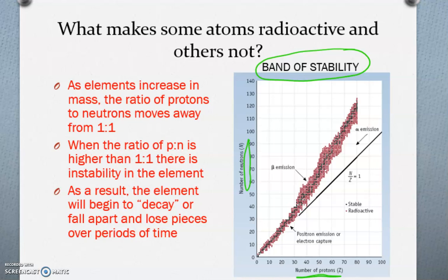As elements increase in mass, the ratio of protons to neutrons moves away from 1 to 1. What that means is, if you're an atom and you're helium, you'll have 2 protons and 2 neutrons in your atom. And that's perfect and it's a 1 to 1 ratio, right?